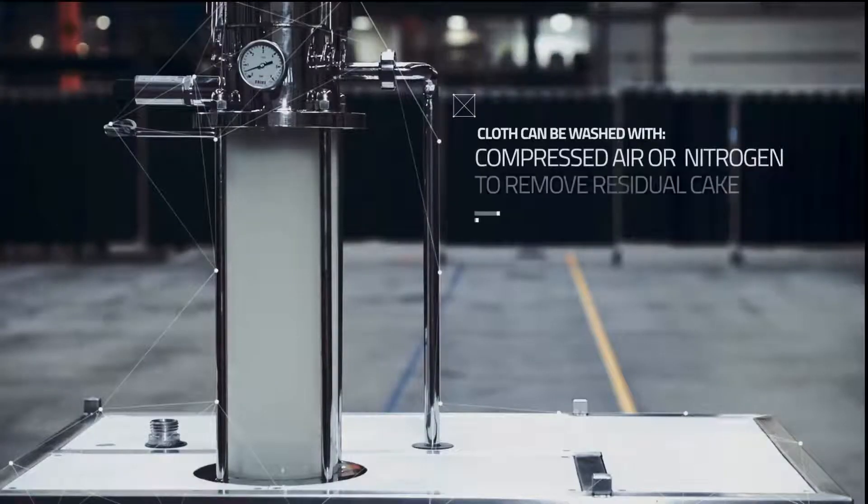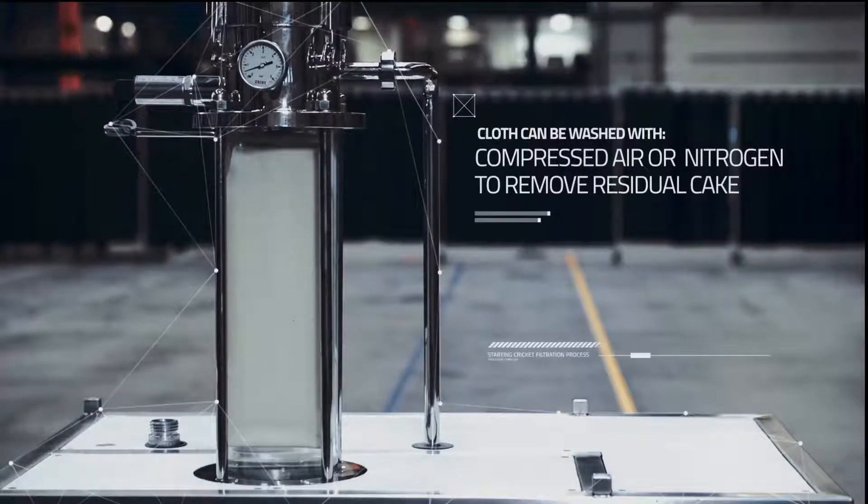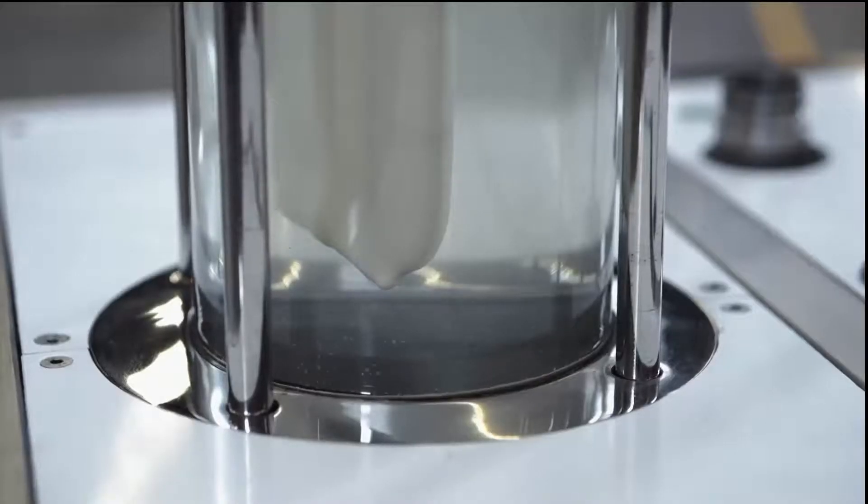A filtration cycle starts with filling the filter. After the filtrate quality is approved in the clarification cycle, the actual filtration starts. Prior to filtration, the cloth can be washed with compressed air or nitrogen to remove residual cake from previous filtration runs.